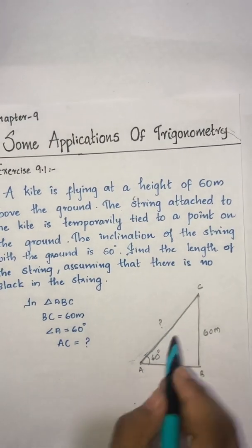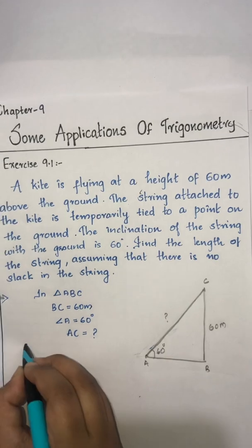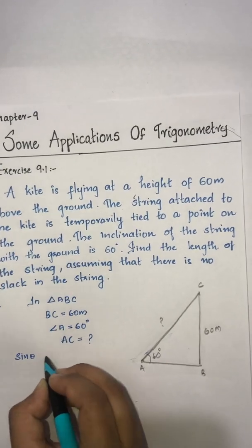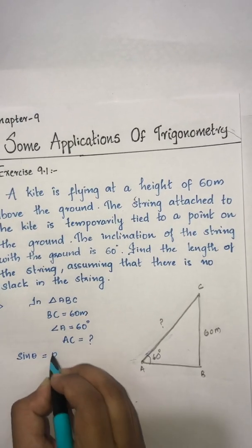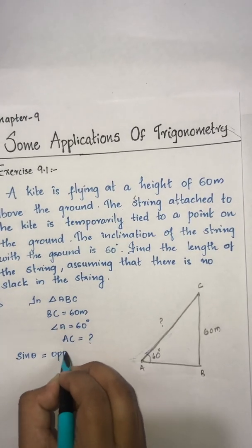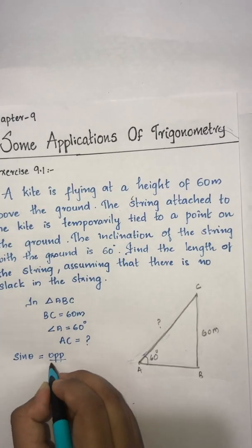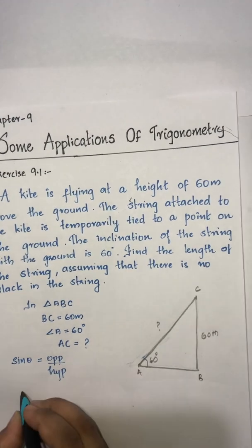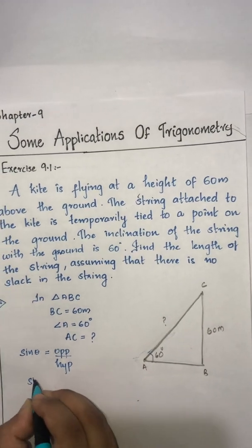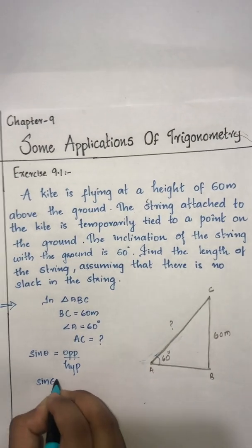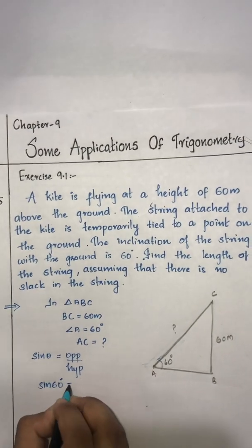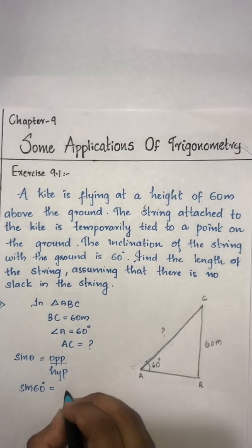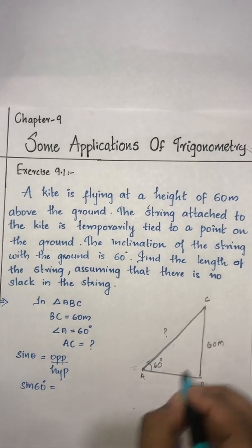Using the trigonometric ratio: sin theta is equal to opposite side divided by hypotenuse. So sin 60 is equal to the opposite side, which is 60 meters, that is BC.